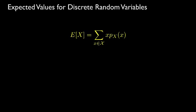The expected value, or mean value, for a discrete random variable is computed by summing the product of all the values the random variable can take with the probability that the random variable takes those values.